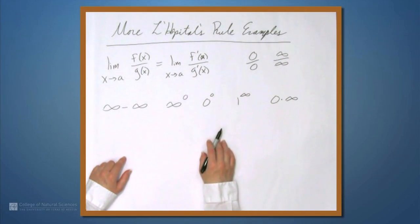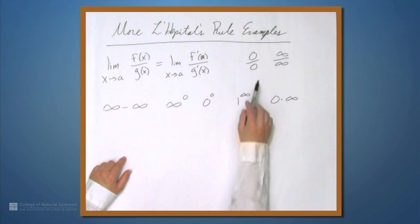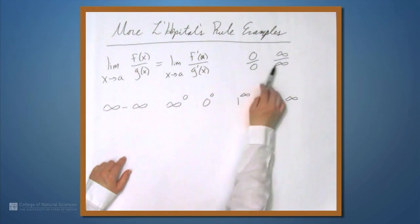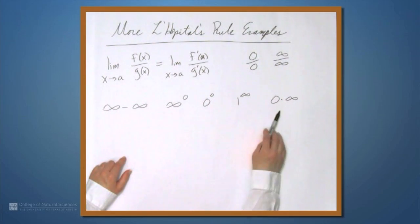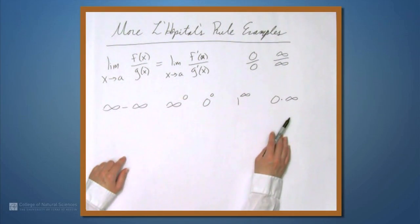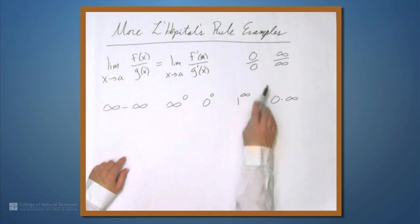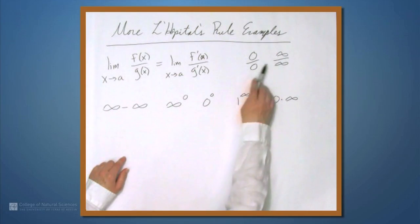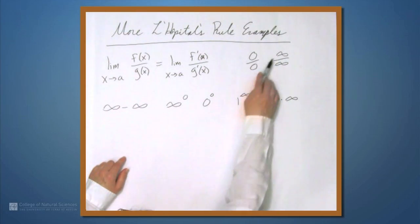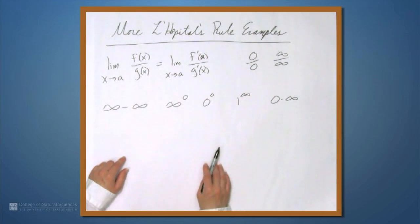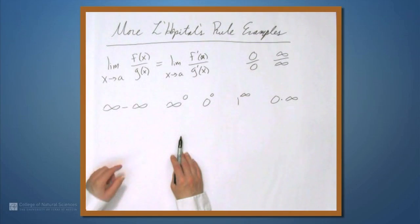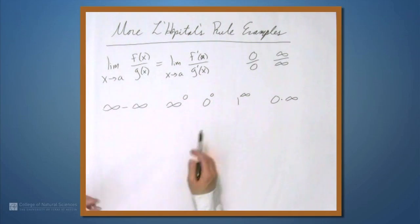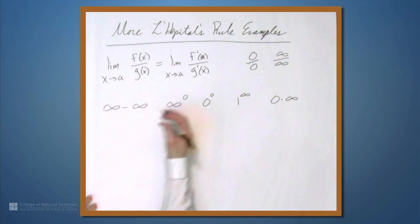So we have all these indeterminate forms, but we can only use L'Hôpital's rule with the first two — 0 over 0 or infinity over infinity. So what can we do if we're given one of the others? Well, we can try to rewrite it as 0 over 0 or infinity over infinity, in which case we might be able to apply L'Hôpital's rule. Let's look at some examples.